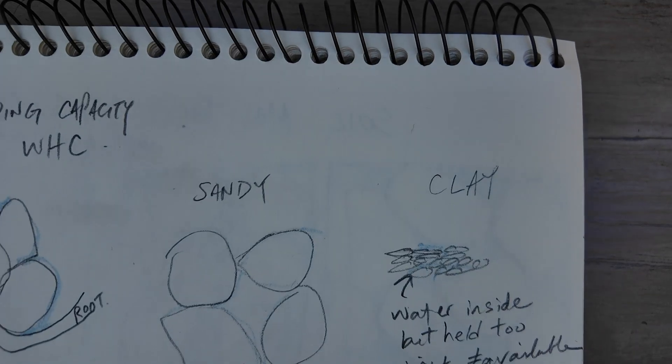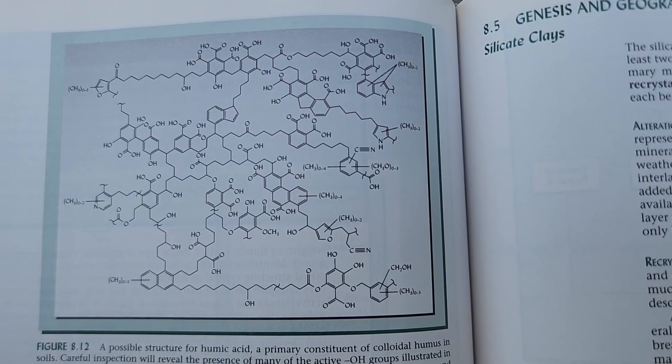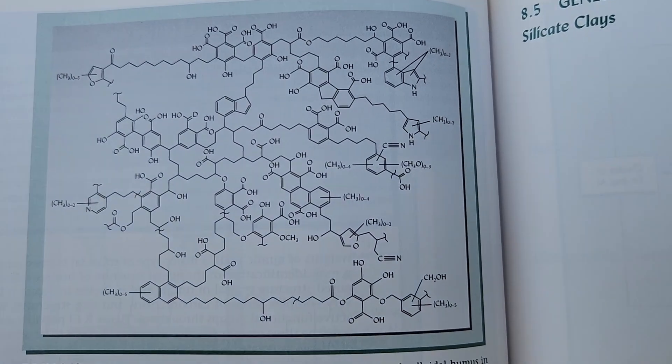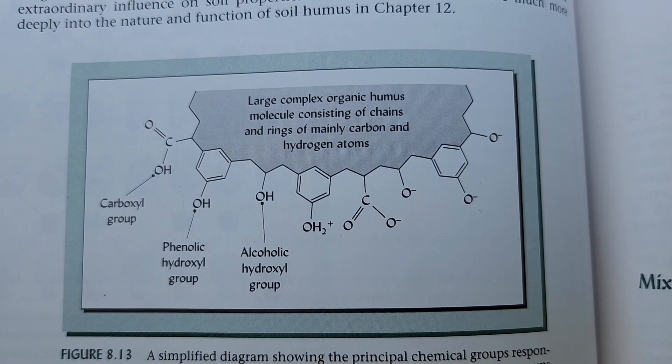The organic matter really helps because it contributes to good structure, forming aggregates, and when it's finally broken down into its final state, it's got really high surface area and it really will hold that nutrient and water for the plants.